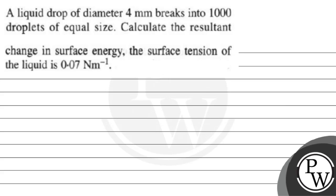Hello, let's read out the question first. A liquid drop of diameter 4 mm breaks into 1000 droplets of equal size. Calculate the resultant change in surface energy. The surface tension of the liquid is 0.07 N per meter.